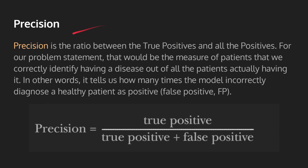Now let's talk about precision. Precision is basically the ratio between the true positives and all the positives predicted. So precision is true positive — the top left square — divided by the entire left column of our confusion matrix. That's what precision is. For our problem, that would be the measure of patients that we correctly identify as having a disease out of all patients we predicted as having it. In other words, it tells us how many times the model incorrectly diagnosed a healthy patient as positive — a false positive.